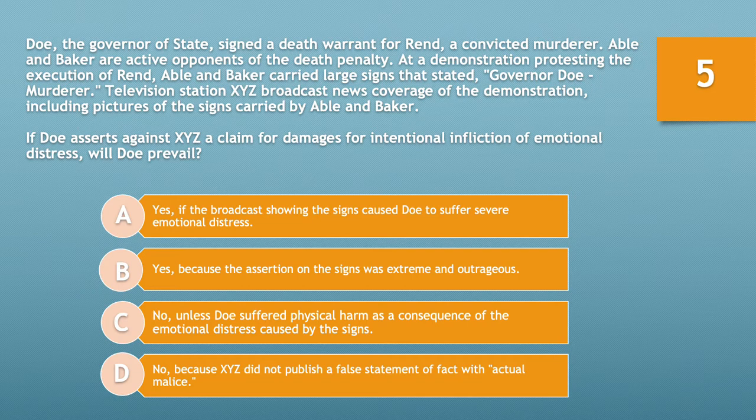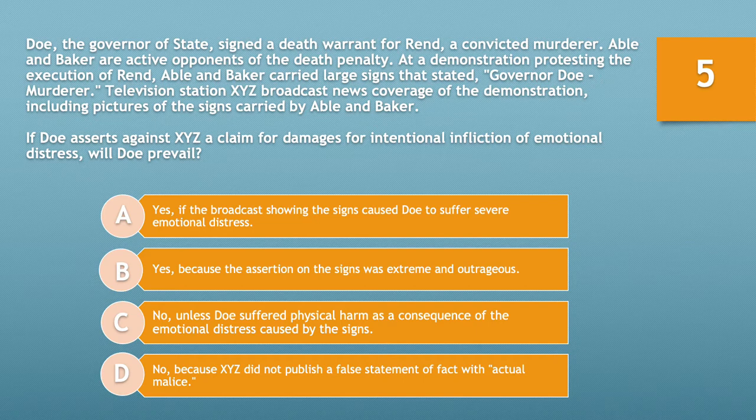Let's move on to question number five. Doe, the governor of state, signed a death warrant for Rend, a convicted murderer. Abel and Baker are active opponents of the death penalty. At a demonstration protesting the execution of Rend, Abel and Baker carried large signs stating 'Governor Doe, murderer.' Television station XYZ broadcast news coverage of that demonstration, including pictures of the signs. If Doe asserts against XYZ a claim for intentional infliction of emotional distress, will Doe prevail?